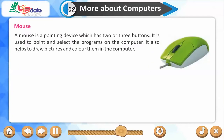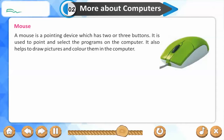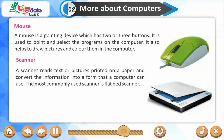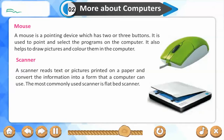A mouse is a pointing device which has two or three buttons. It is used to point and select programs on the computer, and also helps to draw pictures and color them. A scanner reads text or pictures printed on paper and converts the information into a form that a computer can use. The most commonly used scanner is the flatbed scanner.